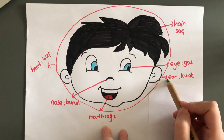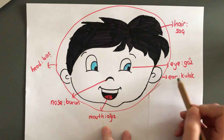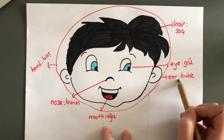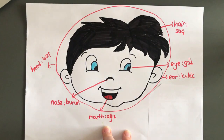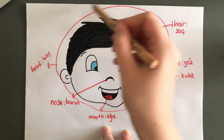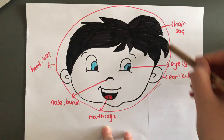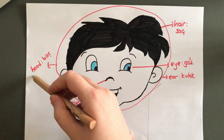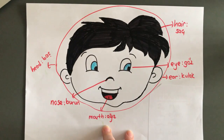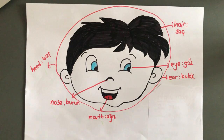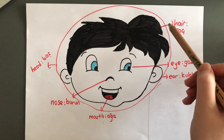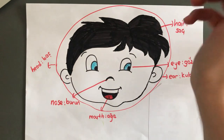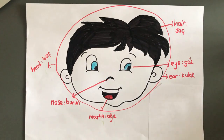This is an ear. Ear. Kulak. This is a hat. Hat. Baş. Kafa. This is hair. Hair. Saç.